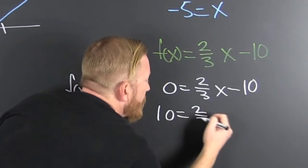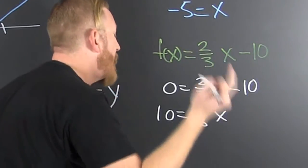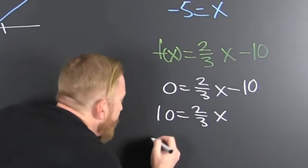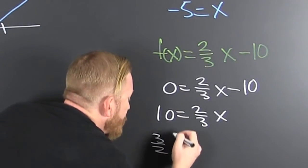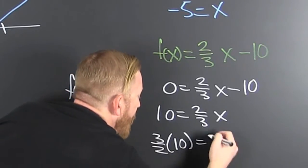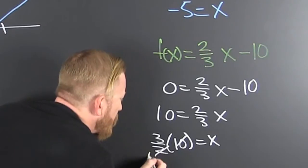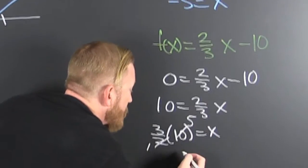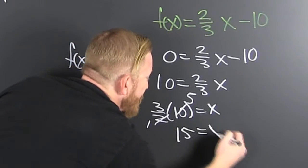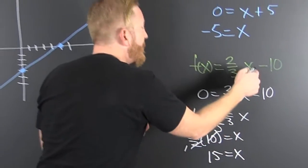So that's 10 is 2 thirds x. Multiply both sides by the reciprocal. And that's 3 halves times 10 is x. What makes that zero? That's you're a five. Five times three is 15. So what's the zero of that function? 15.